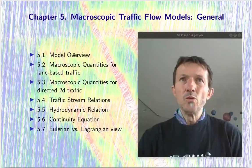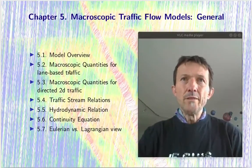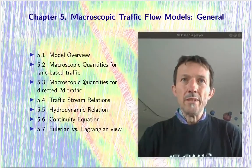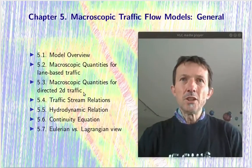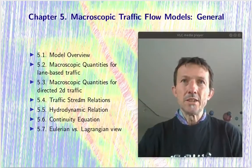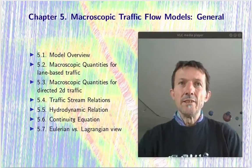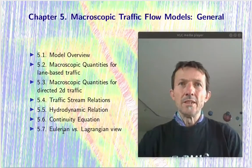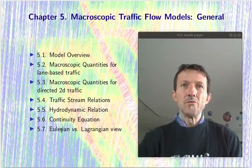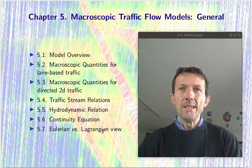After giving an overview, we will define macroscopic quantities first for lane-based traffic, but also for directed lane-free two-dimensional traffic flow. Then we will derive and give some basic relations, such as the basic traffic stream relations, the hydrodynamic relation, and also the continuity equations for different configurations. Finally, we will switch from the general Eulerian view — a fixed viewpoint, an outside observer — into the Lagrangian view, that means an observer inside a vehicle.